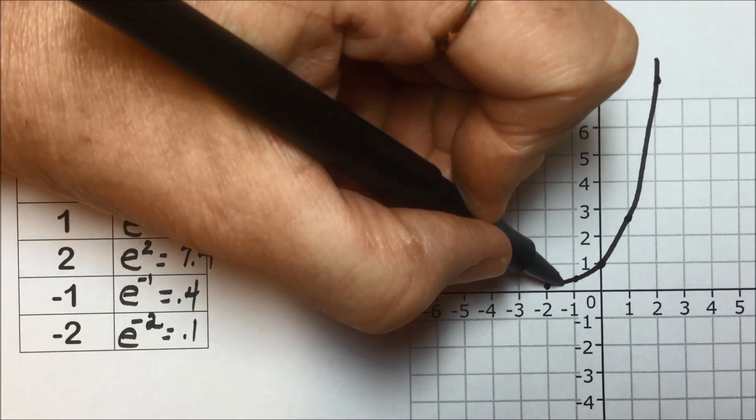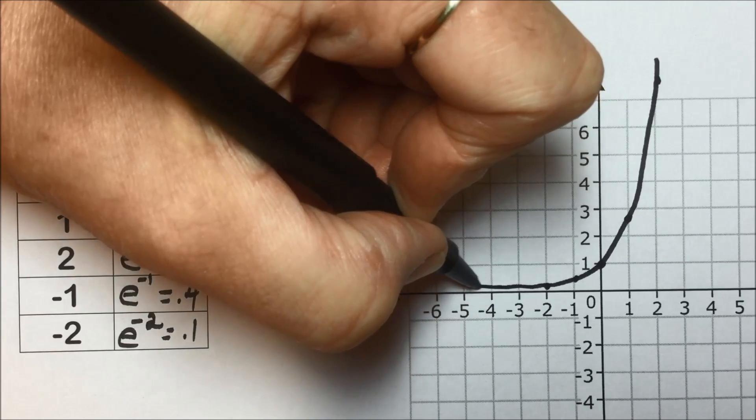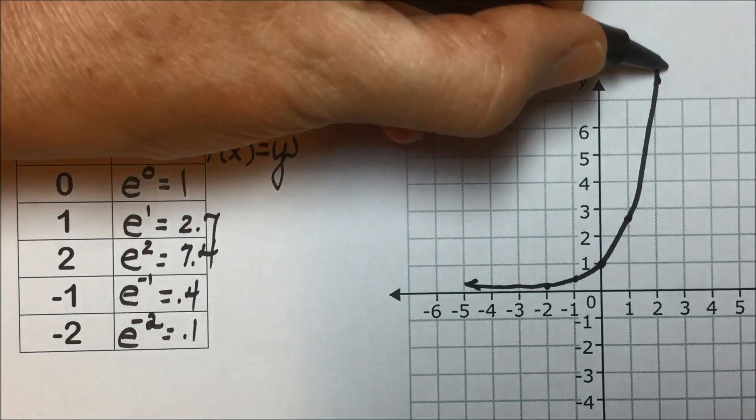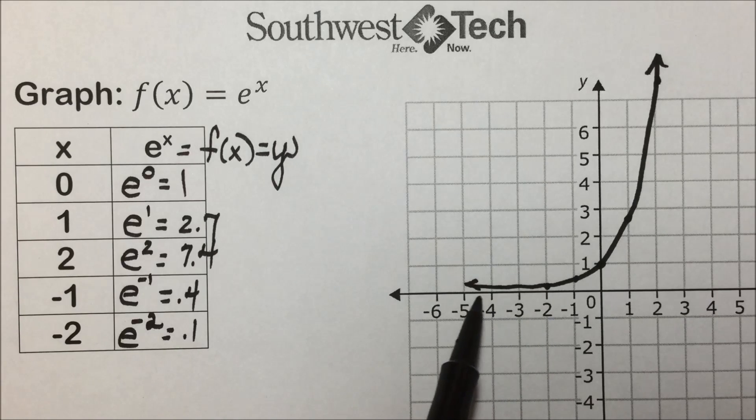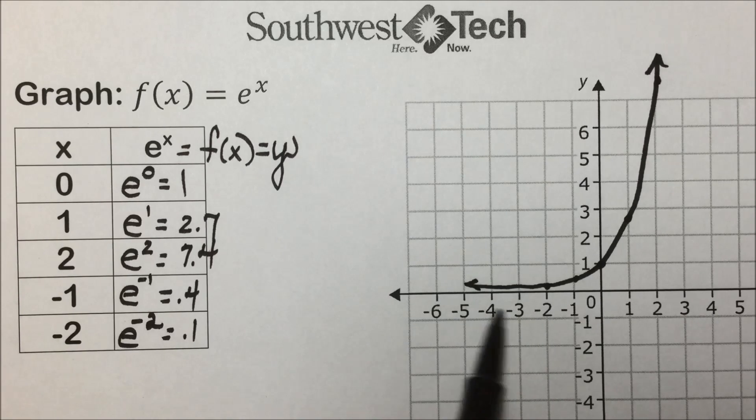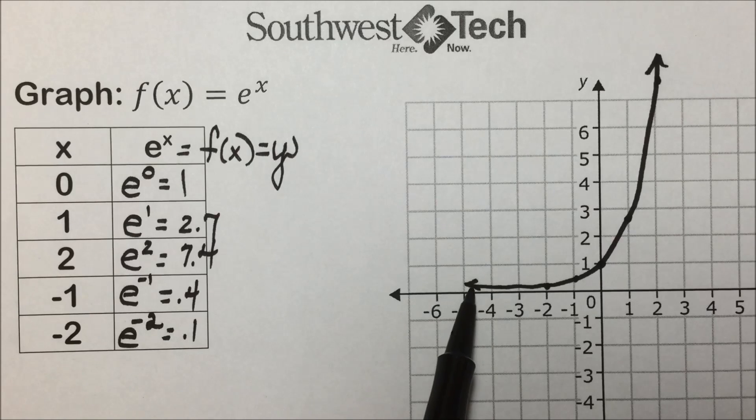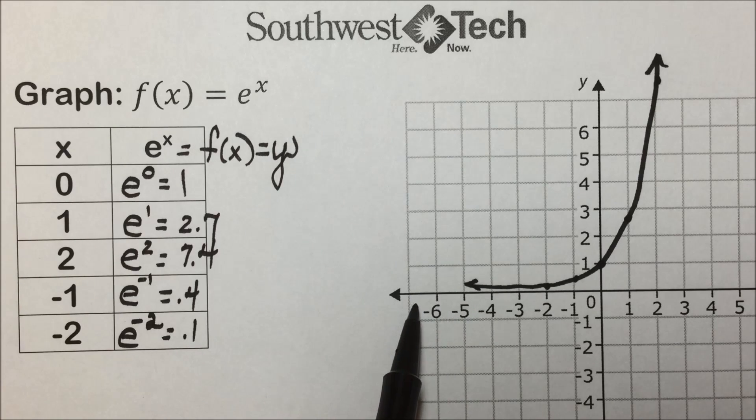we have the classic shape of an exponential function where it's approaching the x-axis as an asymptote. It'll never cross that line. We have our y-intercept at 0, 1. It increases without bound.